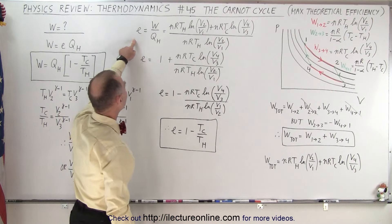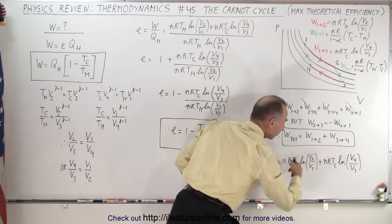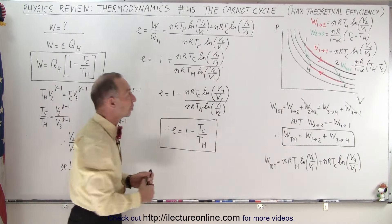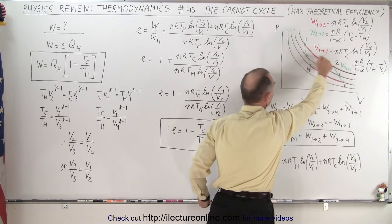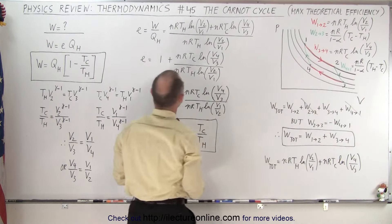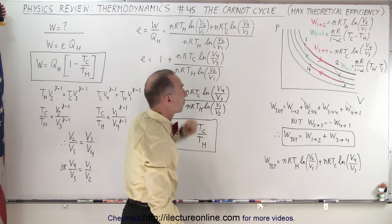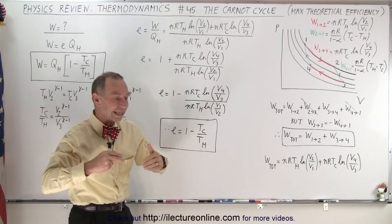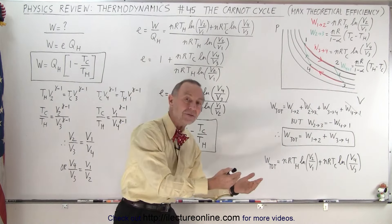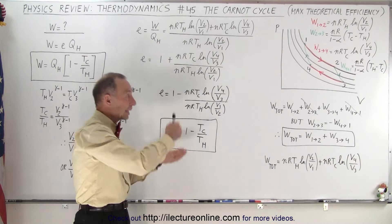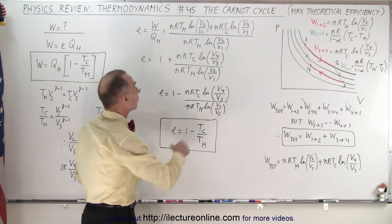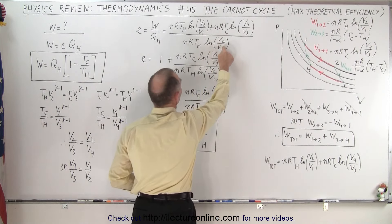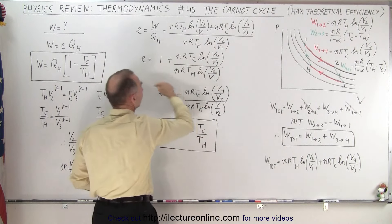The efficiency is equal to the work done divided by the heat added to the process at the high temperature. The heat added at the high temperature is nRT_hot times the natural log of V2 over V1, because with an isothermal process, all the work done is equal to the heat added to the gas, and all the work done on the gas is equal to the heat subtracted from it. So the heat added must be nRT_hot times the natural log of V2 over V1. Simplifying the equation, we end up with this expression.